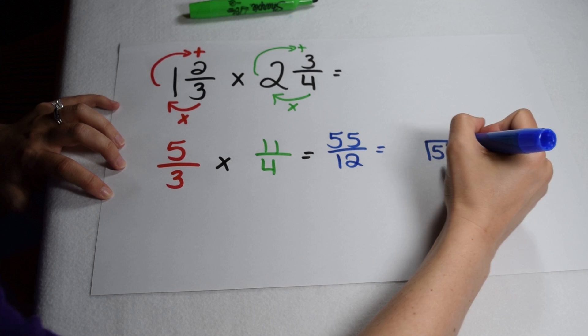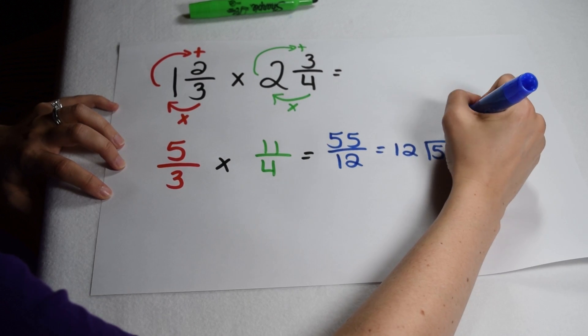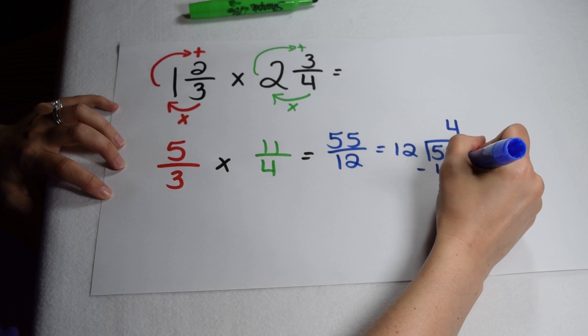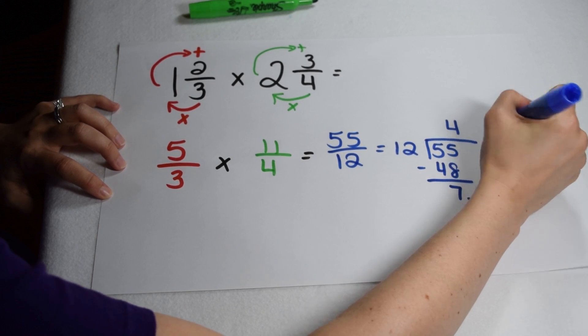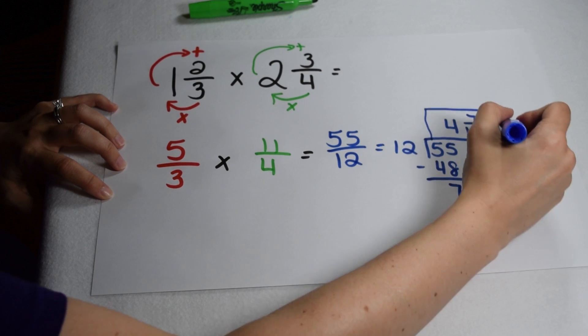We can do that by dividing our numerator of 55 by our denominator of 12. 12 goes into 55 four times, and my remainder of seven becomes my new numerator. So in lowest terms, our answer is going to be four and seven twelfths.